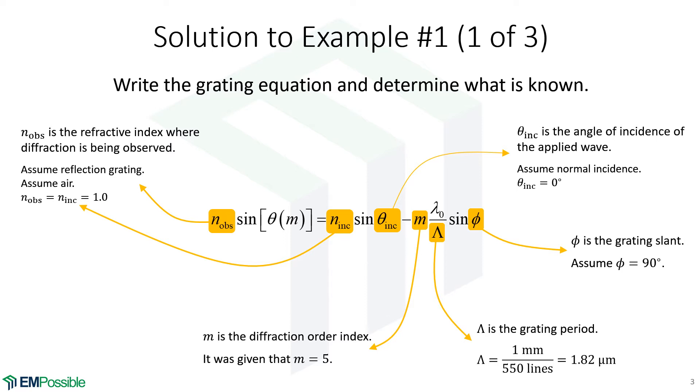The diffraction order index, that's m. Well, the question's asking, what do things need to be? What's the longest wavelength that the fifth order diffracted mode is a real mode, is a propagating wave? So that says we need to set m equal to 5 in this equation.